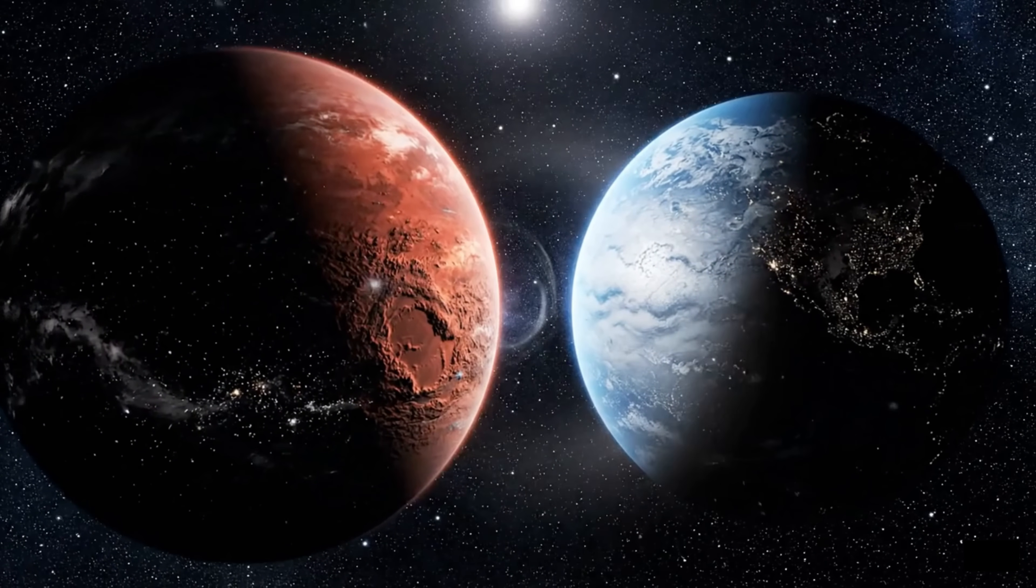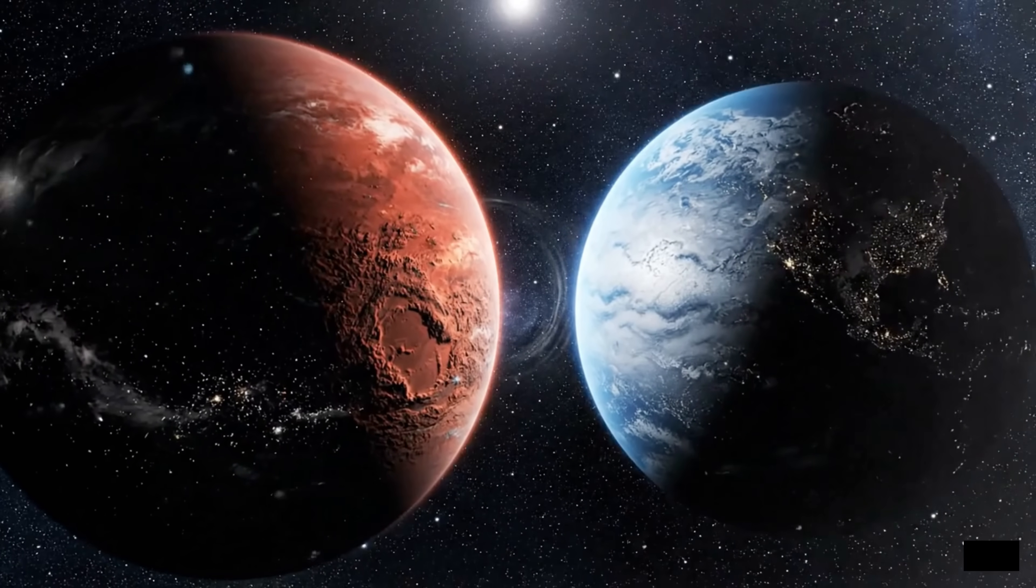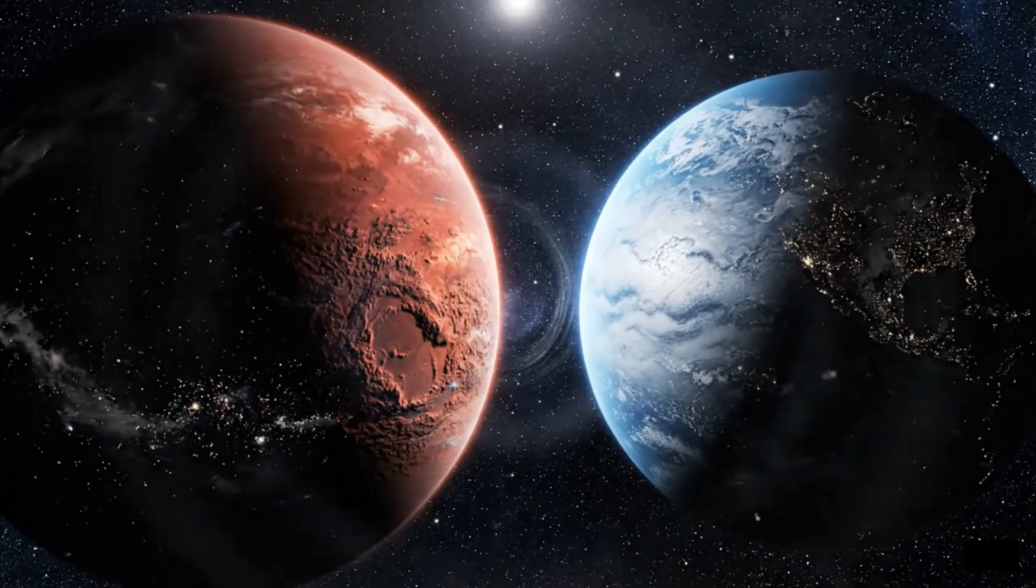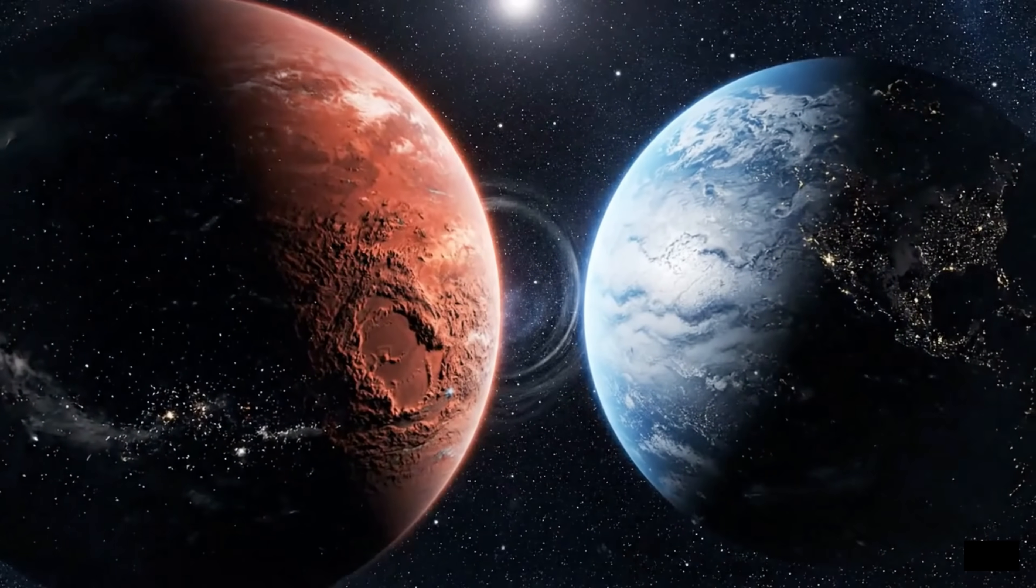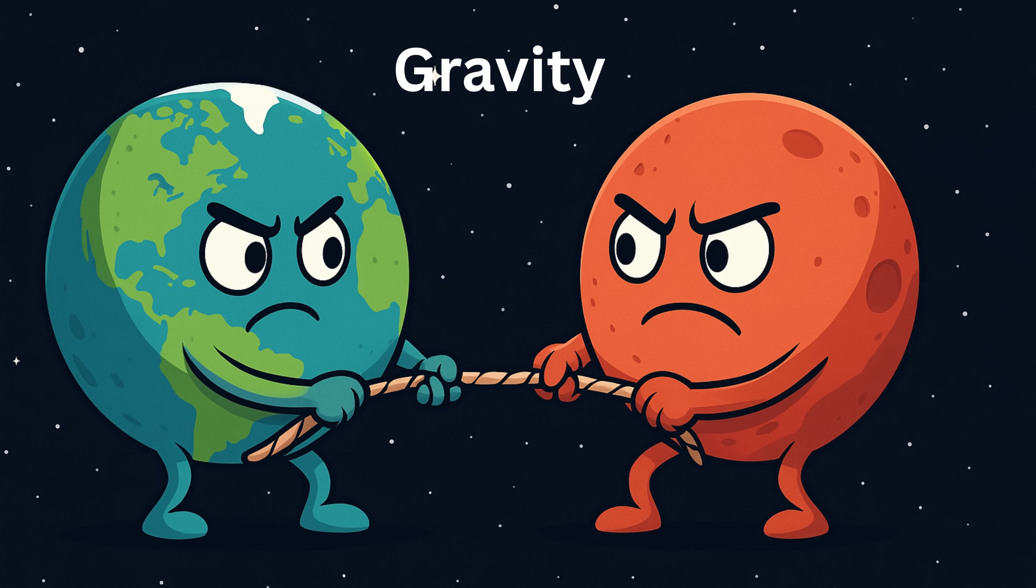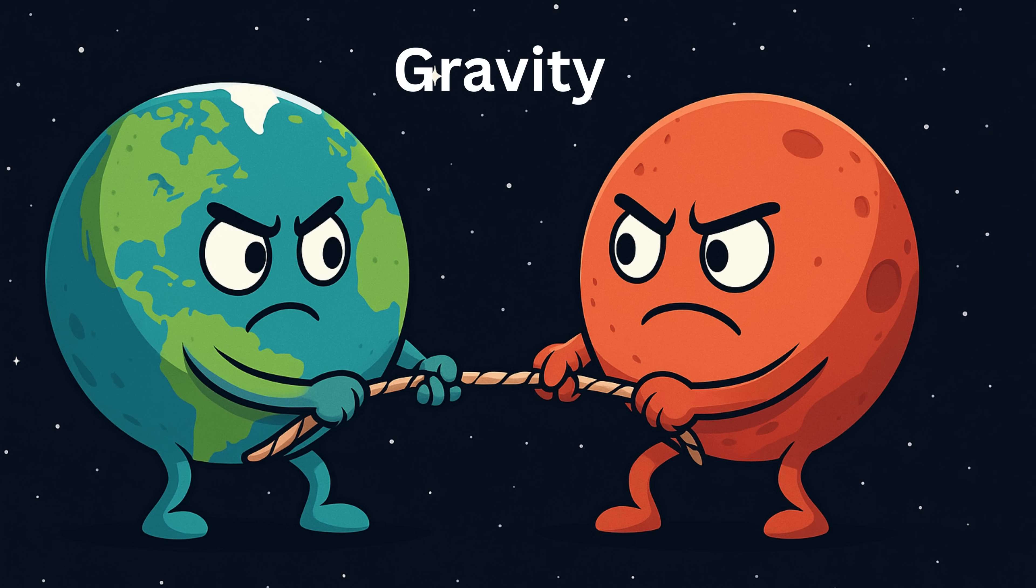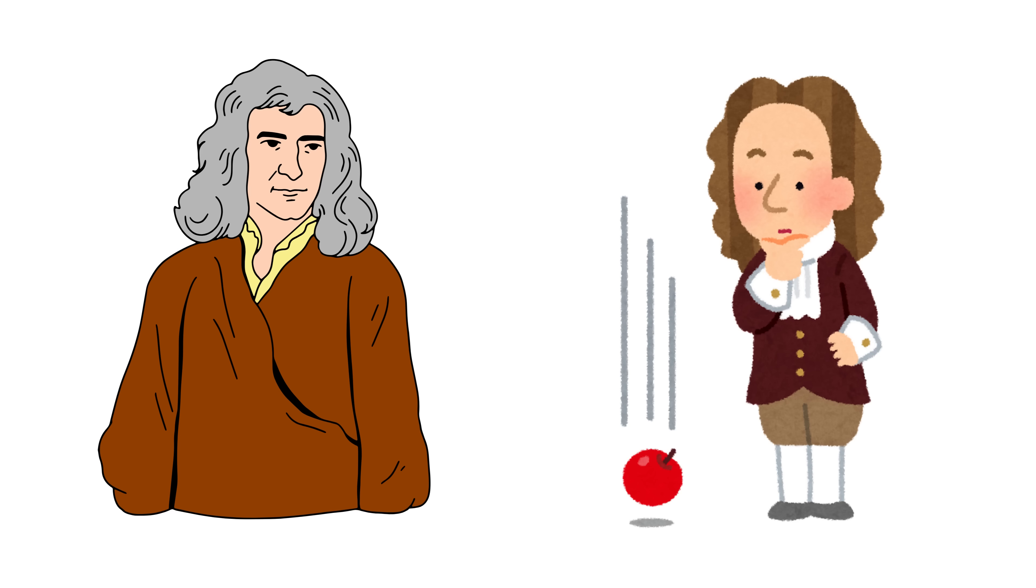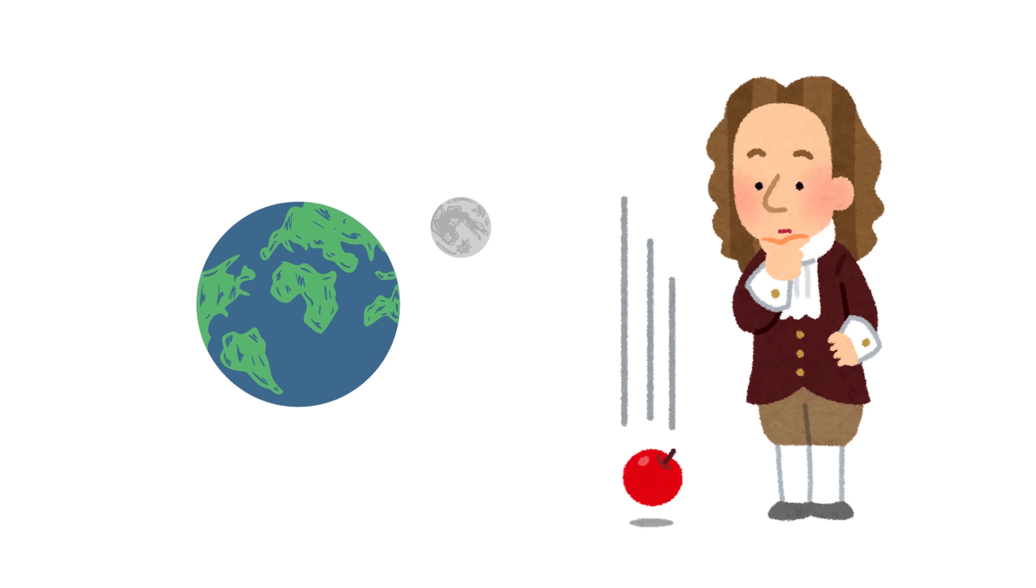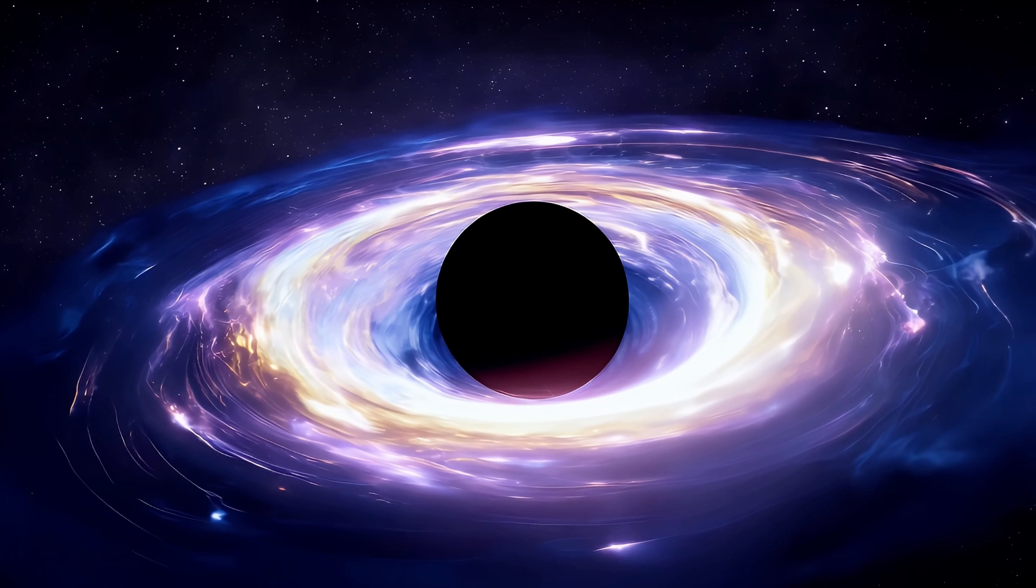According to Newton, everything in the universe pulls on everything else. The larger the mass, the stronger the pull. That pull is what we call gravity. Newton's ideas explained a lot. They told us why apples fall to the ground and why the moon orbits the earth. And it worked, but not perfectly.